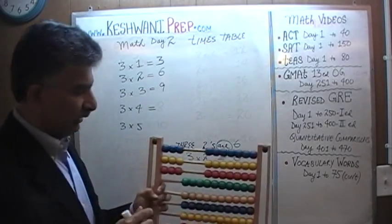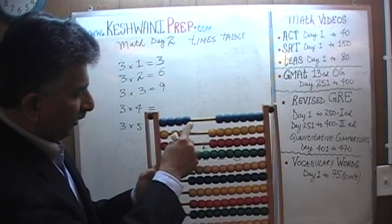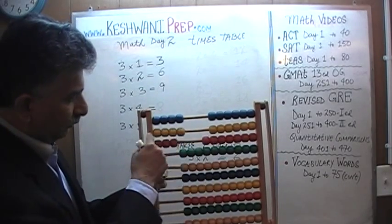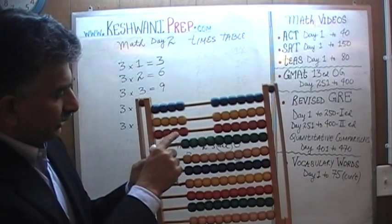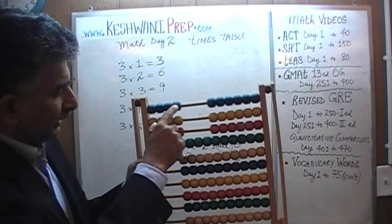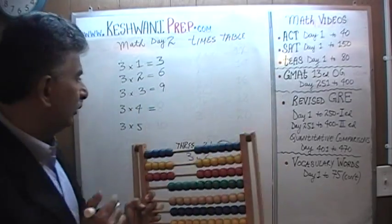4 3's. Let's add 4 3's. Now we have 1 four, there is 1 four, 2 fours, 3 fours. Can you count them? 1, 2, 3, 4, 5, 6, 7, 8, 9, 10, 11, 12. 3 4's are 12.